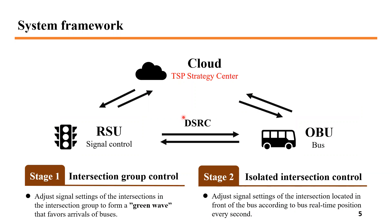Here comes the system framework. We have three parts in our system: RSU for signal control, OBU sending GPS via 4G or DSRC, and the cloud as the TSP strategy center. In the TSP control strategy, we design a two-stage control framework. The first stage adjusts signal settings of intersections in the intersection group to form a green wave that favors bus arrival, called intersection group control. The second stage adjusts signal settings of the intersection in front of the bus according to its real-time position every second, called isolated intersection control.